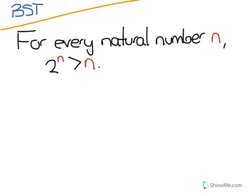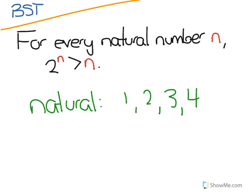So let's take as an example the following statement. For every natural number n, 2 to the n is greater than n. And we should remember that natural numbers are just counting numbers, like 1, 2, 3, 4, etc. They're not negative numbers.